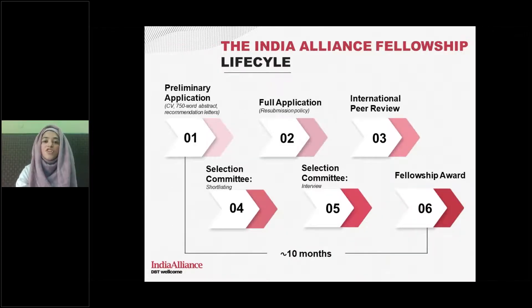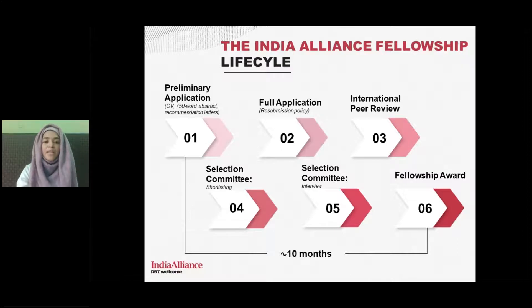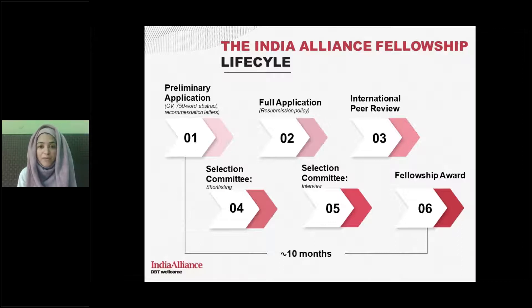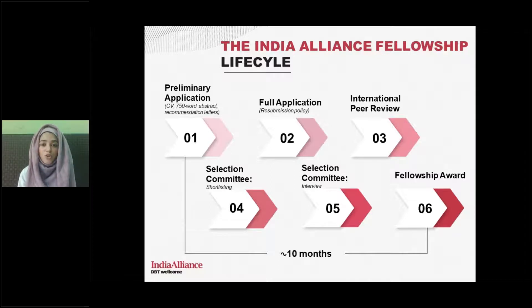This is what the India Alliance Fellowship life cycle looks like. We have a two-step application process. Applicants first fill in a preliminary application — a shorter document requiring an essential CV, a 750-word abstract of the project proposal, and recommendation letters. Shortlisted applicants are then asked to submit a full application, which is shared with our international selection committee. The full application is more comprehensive — outlining the entire project proposal, techniques, and budget. These applications go to international peer reviewers, whose feedback is used alongside an internal selection committee to shortlist candidates for interview. Based on interview performance, candidates are either awarded or declined. This entire process takes about 10 months, which is why it's good to start planning ahead of time.